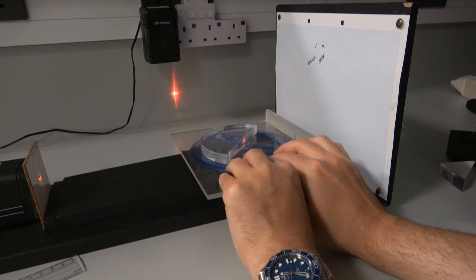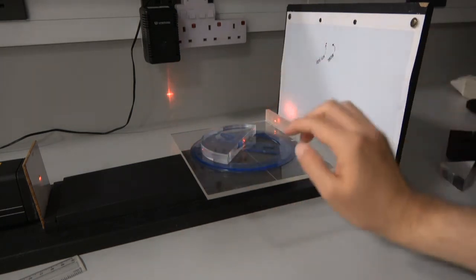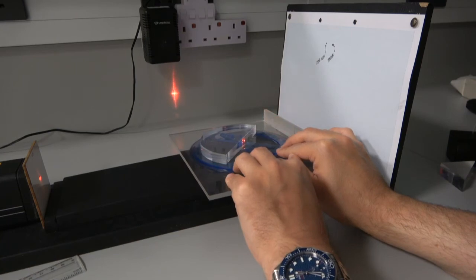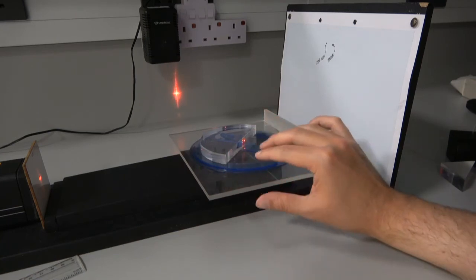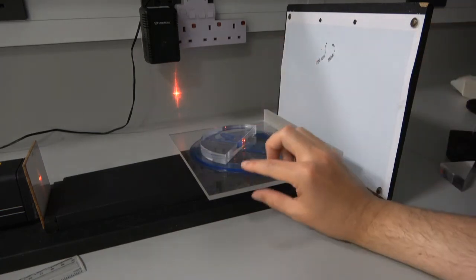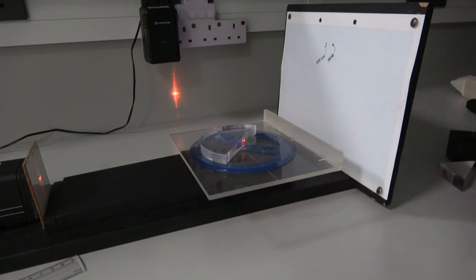And what you might notice there is if I'm looking at this transmitted beam, there's a certain point at which it disappears. It's not going off the face of the protractor, so it's not like it's being transmitted off the edge of the screen, because you can see only a small turn back brings it back. And so what we've found here is total internal reflection.